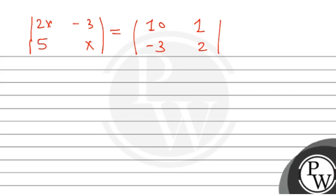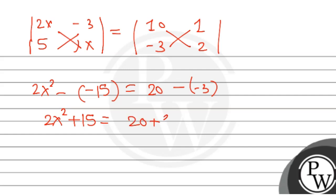So, using the determinant formula: 2x times x minus 5 times negative 3 equals 10 times 2 minus negative 3 times 1. So 2x² minus negative 15 equals 20 minus negative 3, which gives us 2x² plus 15 equals 23.